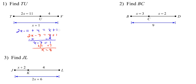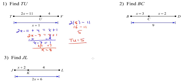Now that we know x equals 8 and we're looking for TU, which is 2x minus 11, we calculate 2 times 8 is 16, and 16 minus 11 is 5. So the length of TU is 5, and that's our answer.